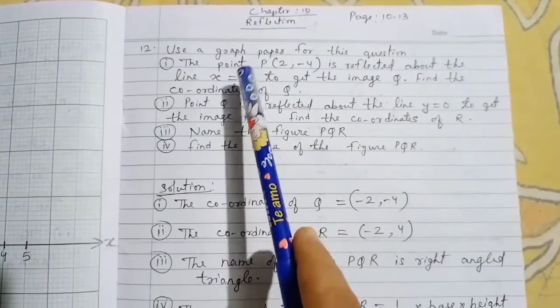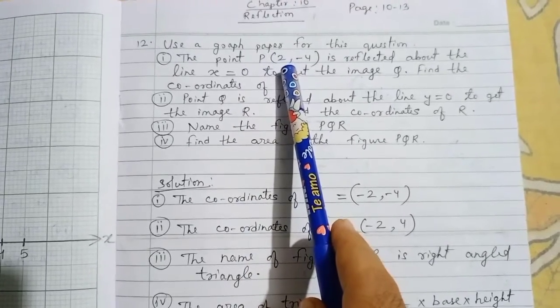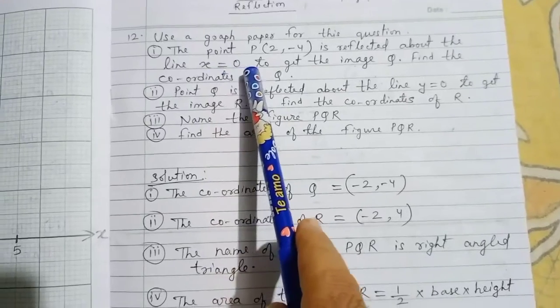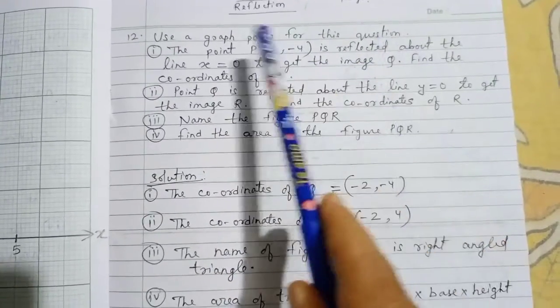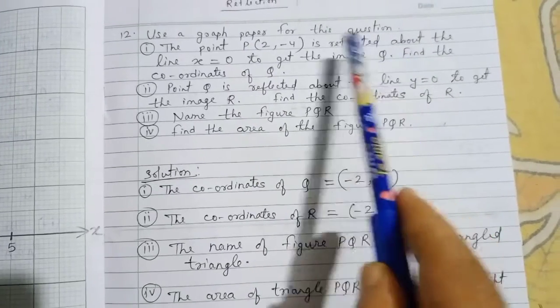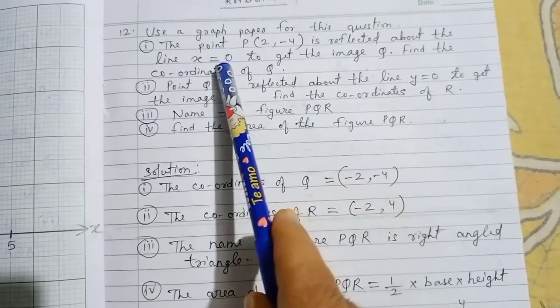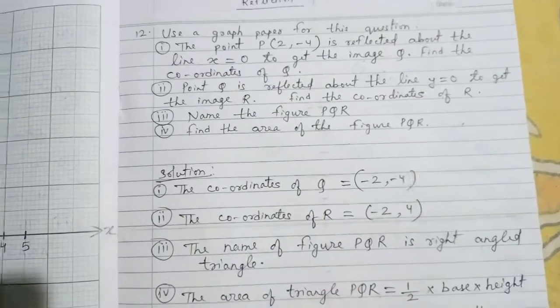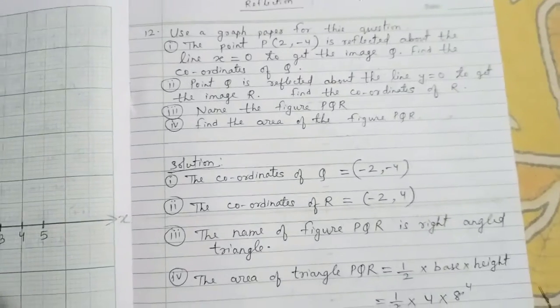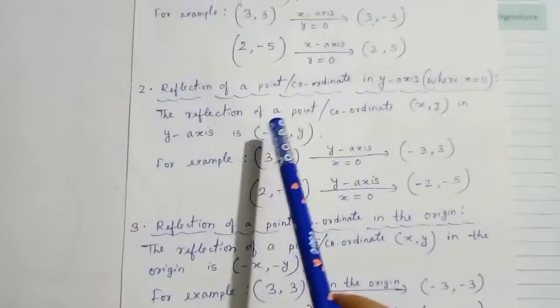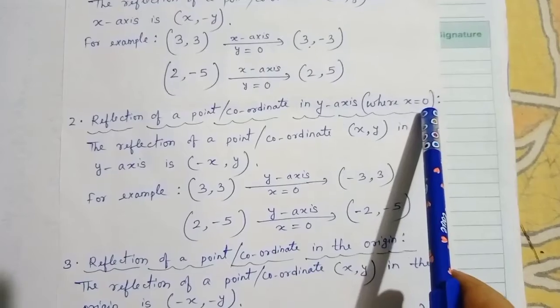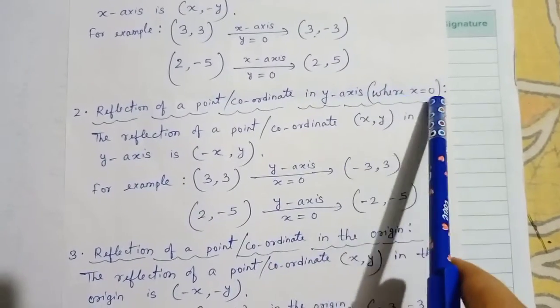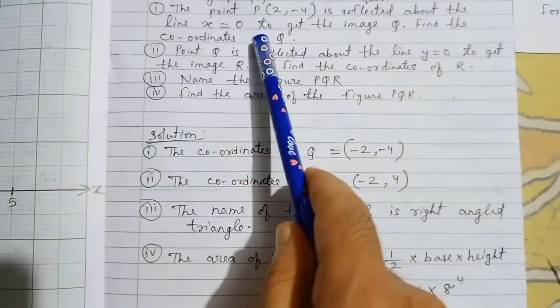Second question: Use a graph paper. Point P(2,-4) is reflected about the line x=0 to get image Q. Now x=0 means the y-axis — as stated in the formula list, reflection in the y-axis and x=0 are the same thing. So we reflect P in the y-axis.